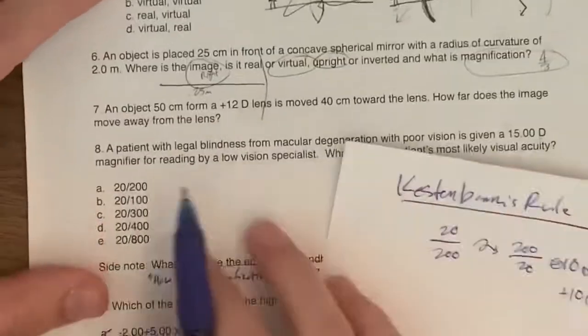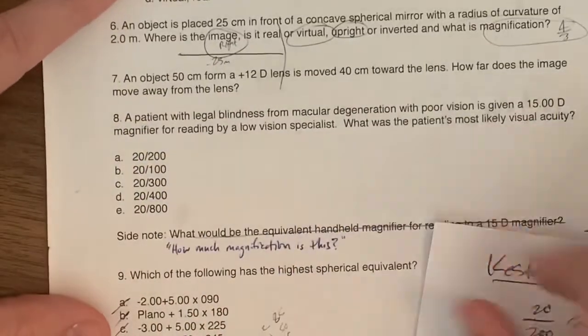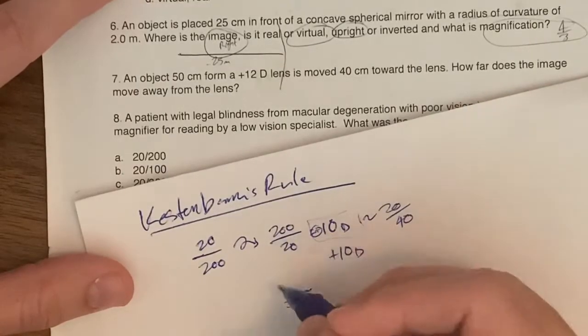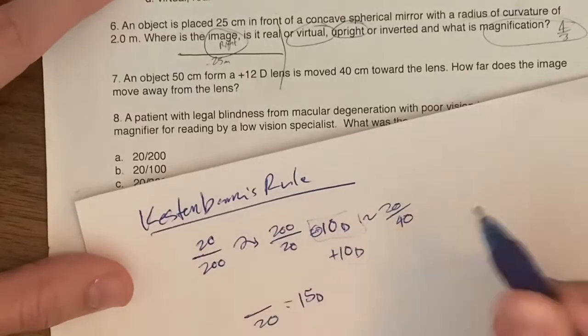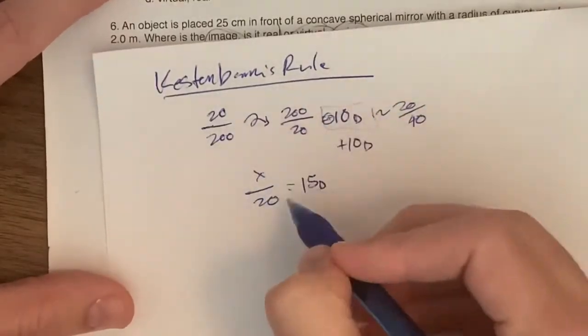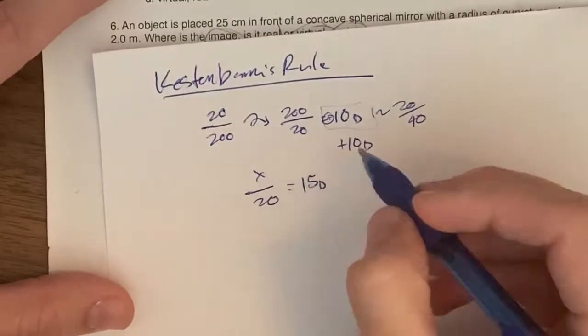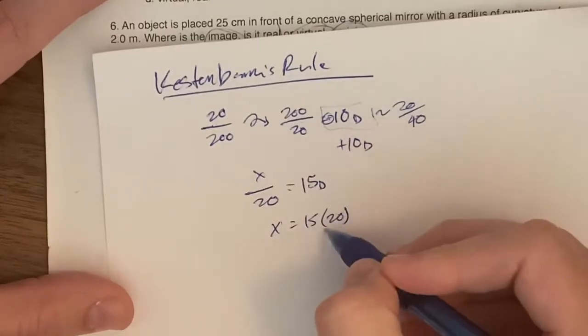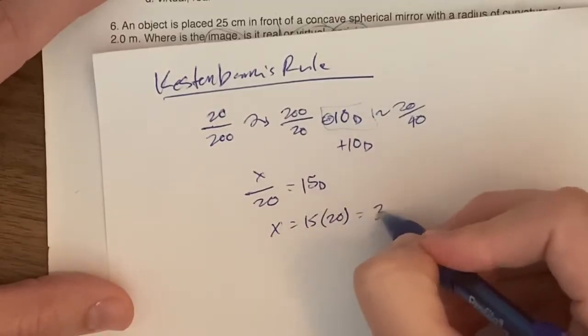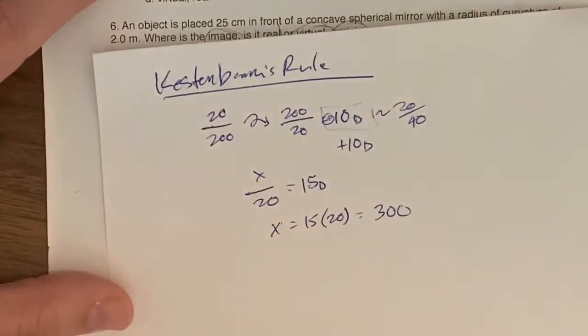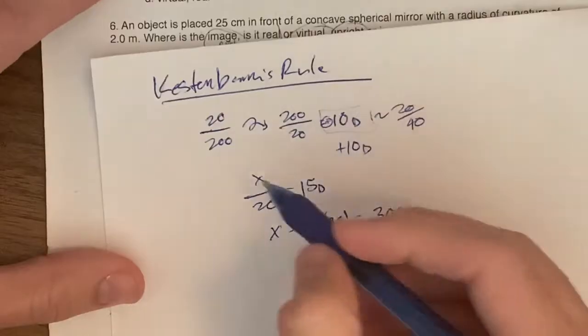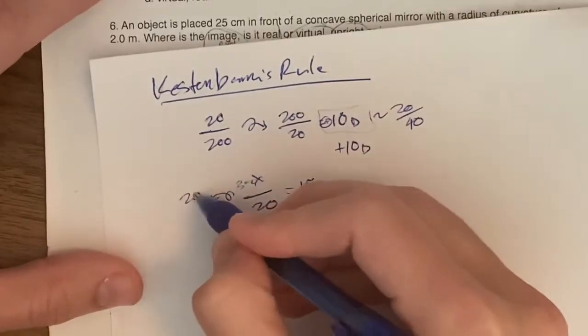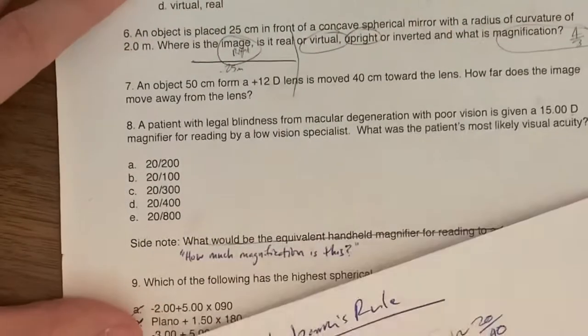So if we use that for our problem here, he was given a 15 diopter lens instead of a 10, so 15 diopters. We know 20 is going to be constant, so something over 20 equals 15. We just multiply this over, so X equals 15 times 20, which is 300. So the patient's vision is going to be the reciprocal here, which is 20/300. That is C.